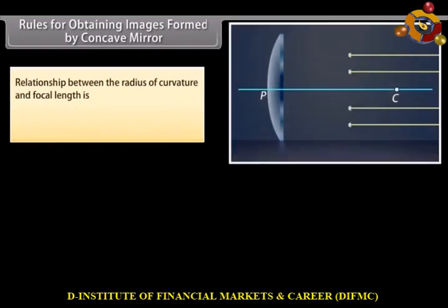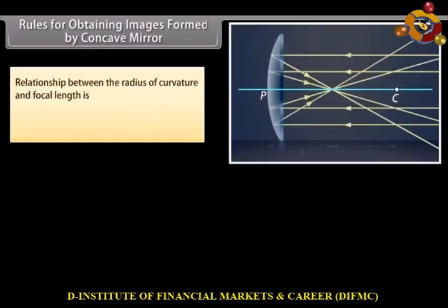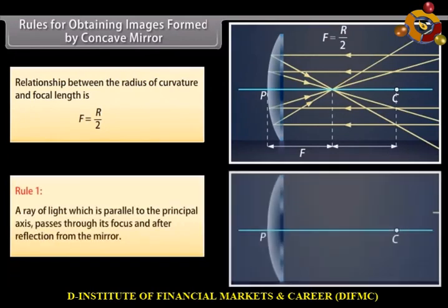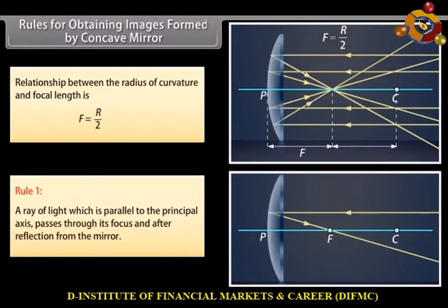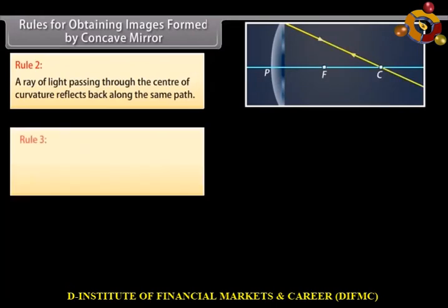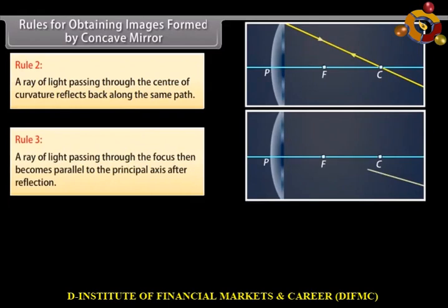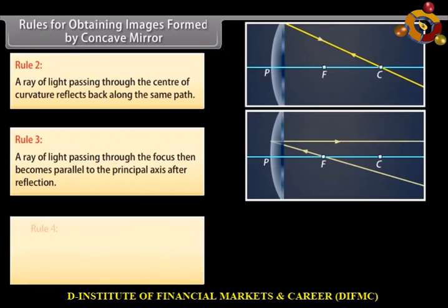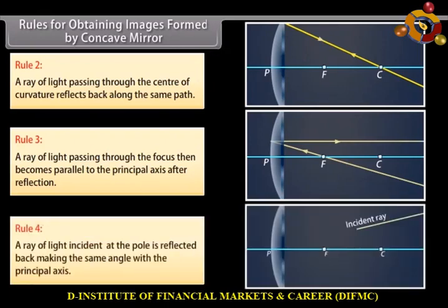The relationship between the radius of curvature and focal length is F = R/2. Rule 1: a ray of light which is parallel to the principal axis passes through its focus after reflection from the mirror. Rule 2: a ray of light passing through the center of curvature reflects back along the same path. Rule 3: a ray of light passing through the focus then becomes parallel to the principal axis after reflection. Rule 4: a ray of light incident at the pole is reflected back making the same angle with the principal axis.